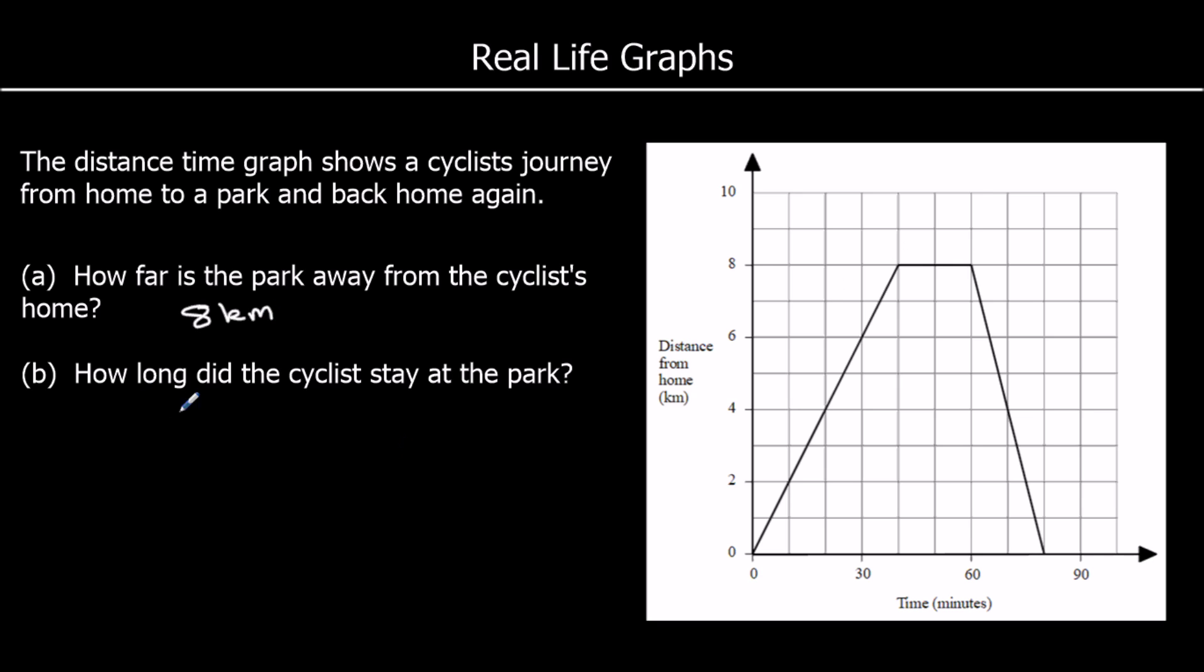How long did the cyclist stay at the park? So they arrived at the park at 40 minutes and left at 60 minutes. So 40 minutes to 60 minutes is 20. So it's 20 minutes.